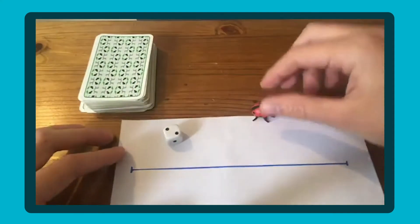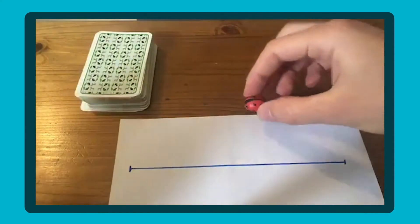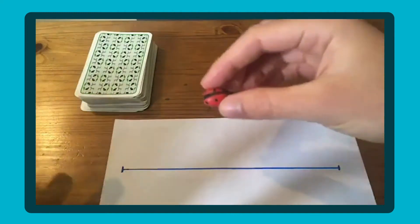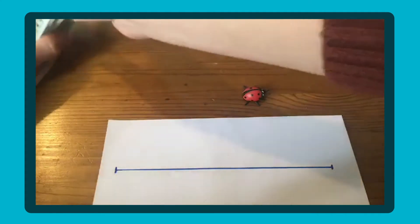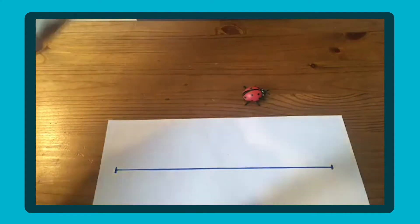You can see I've got my ladybird to help me. That could be anything—a character, anything your child likes and will engage with. What we're going to do is use these playing cards to generate a number.